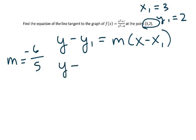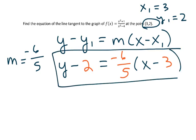So I'm going to plug in those 3 things. So I have y minus y1, which is 2, is equal to negative 6 fifths times x minus x1, which is 3, and that is the equation of a line tangent to the graph of f of x.